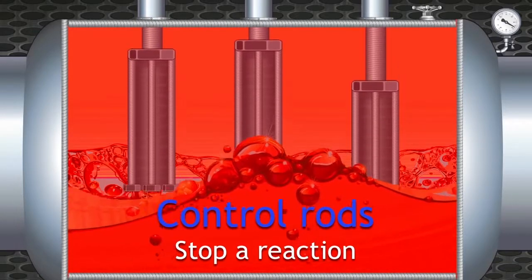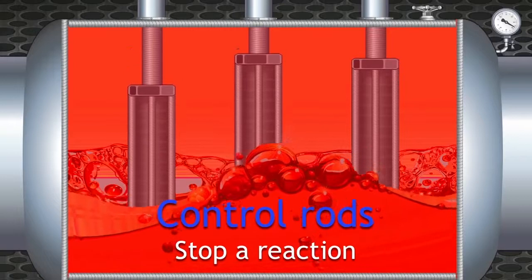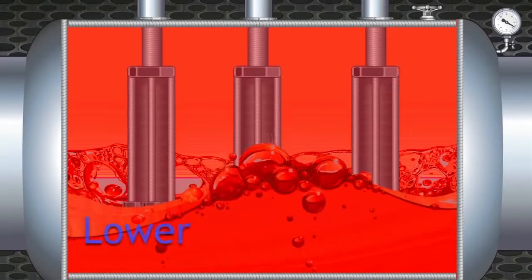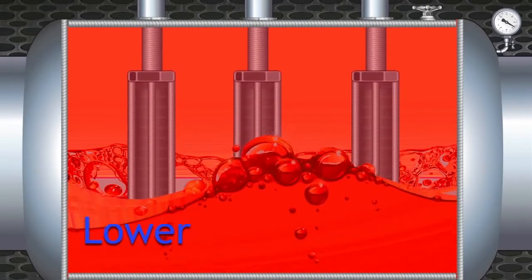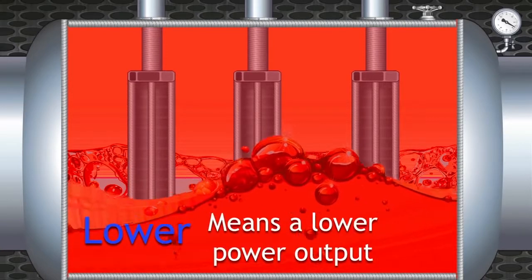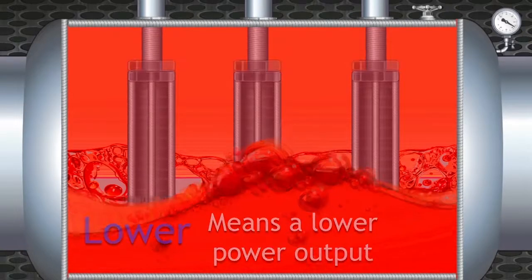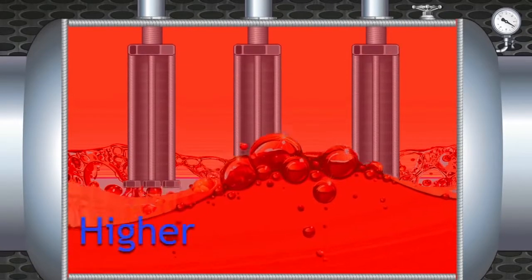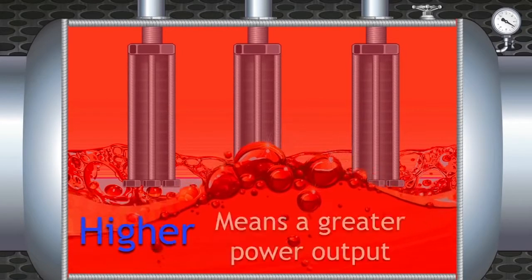During normal operation, they are raised and lowered accordingly to vary power output. The lower they are, the lower the rate of reaction, which means a smaller power output. The higher they are, the higher the rate of reaction, which means a greater power output.